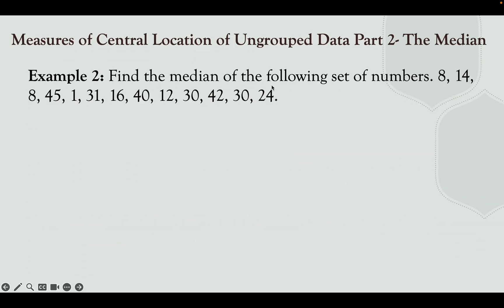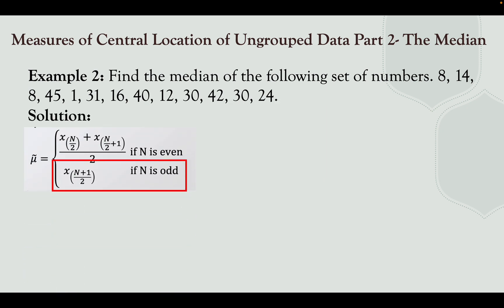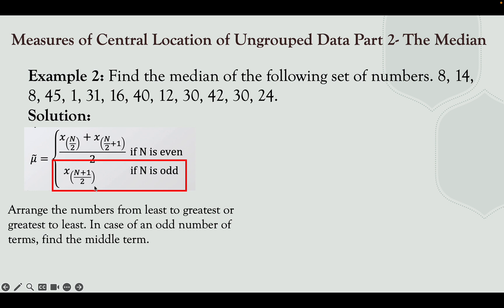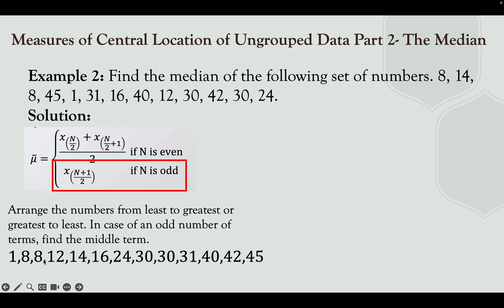Next, find the median of the following set of numbers: 8, 14, 8, 45, 1, 31, 16, 40, 12, 30, 42, 30, 24. We have 13 data, so n is odd. Arrange the numbers from least to greatest: 1, 8, 8, 12, 14, 16, 24, 30, 30, 31, 40, 42, 45.